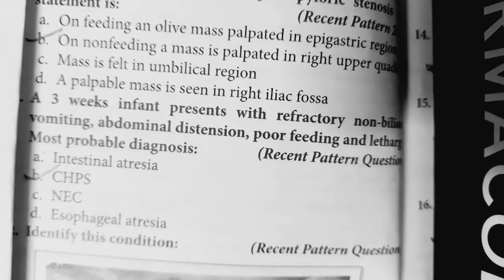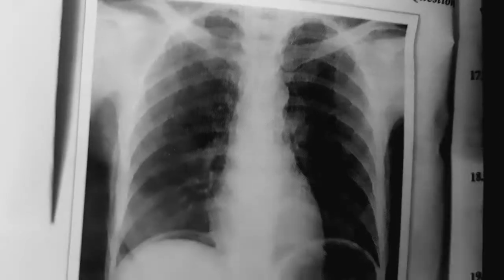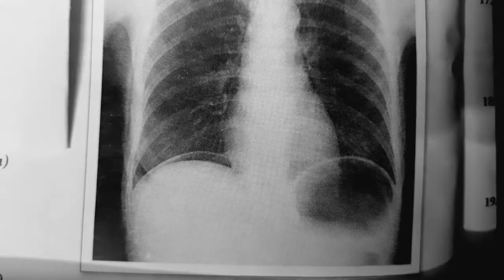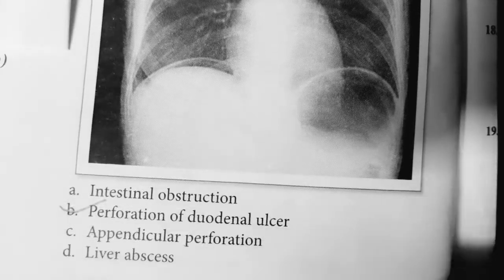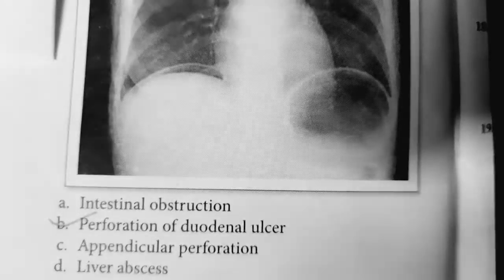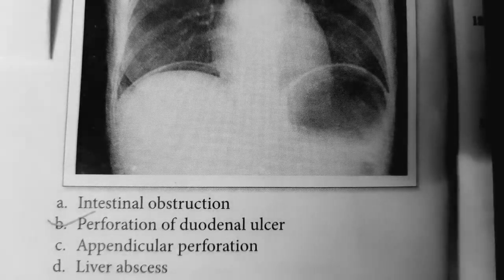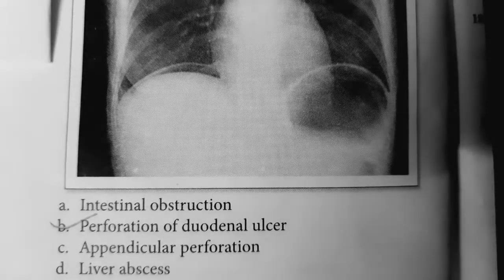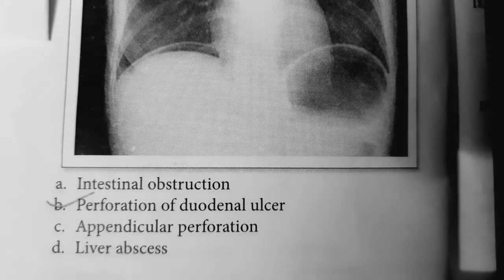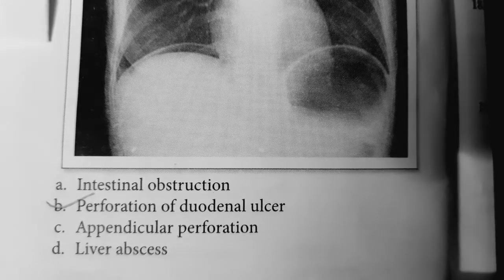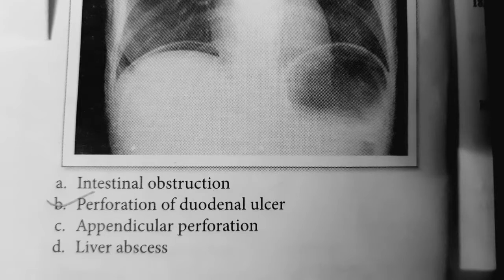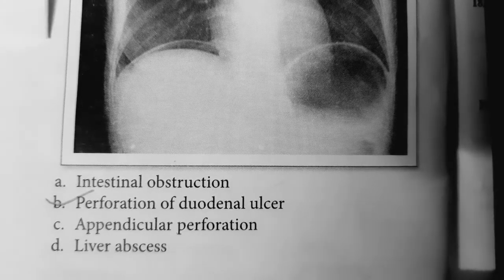Question 7: Identify the given condition. You can see air present under the diaphragm, especially on the right side — this is pneumoperitoneum, which occurs due to perforation. It is very common in hollow viscus perforation. Among the options given, the most common cause of perforation is duodenal ulcer — appendicular perforation is also an option, but the answer here is perforation of duodenal ulcer.